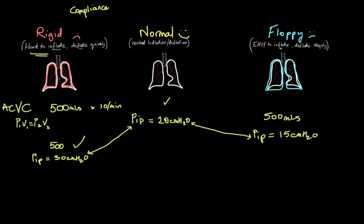Interestingly, when lungs become hyperinflated they can actually start behaving like rigid lungs. The key point of this video is that in volume control ventilation, pressure is variable. The volume will be 500 mils, but the pressure will vary depending on the properties of the lung.